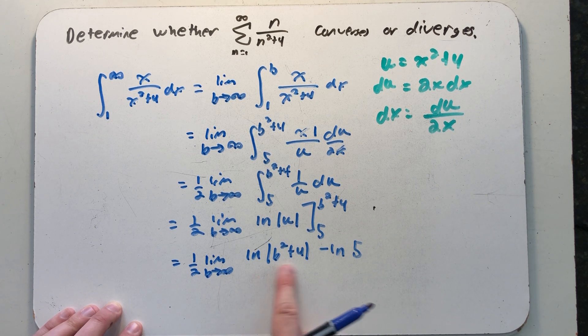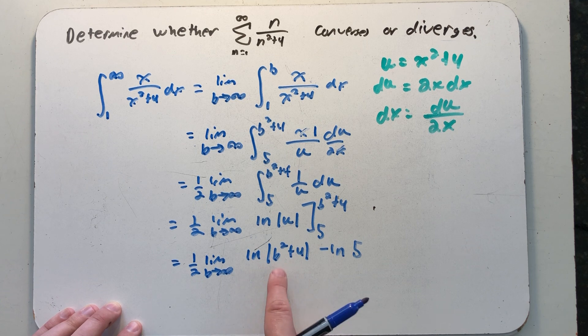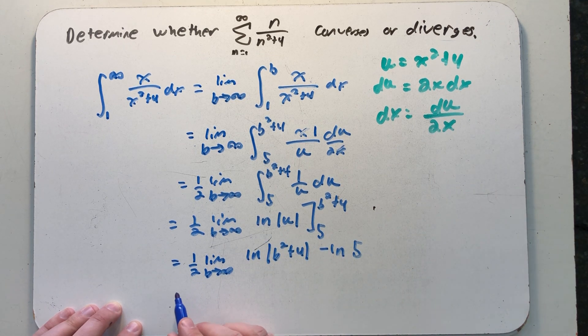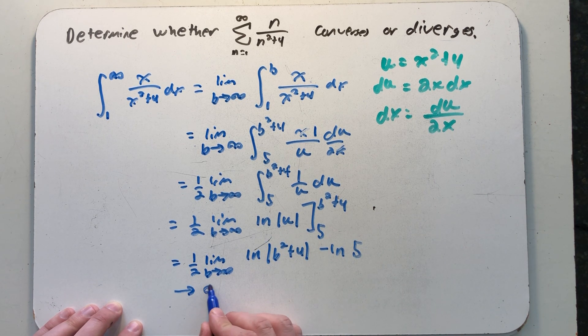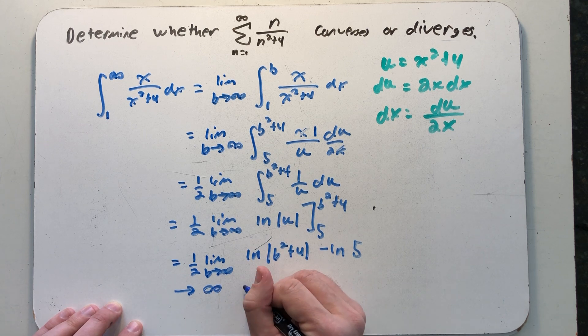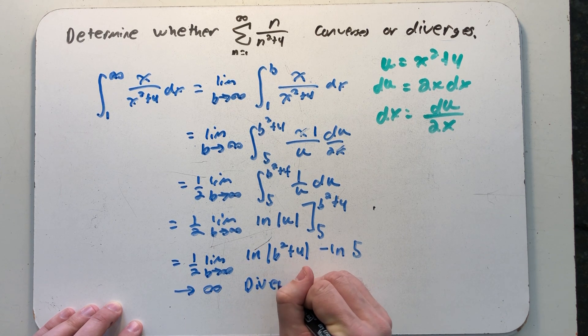Well as b runs off to infinity, b squared plus 4 runs off to infinity. And the natural log as the inside goes to infinity is also infinity. This limit is infinite which means this improper integral diverges.